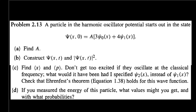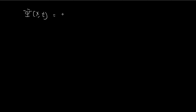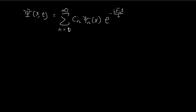Now for part B, we need to construct the wave function with the time component included. Recall the formula for the wave function — it is equal to the linear combination of all the possible stationary states: cn times the nth stationary state, which has the x-dependent term, and then the time-dependent term. In our case, we can find what these cn's are equal to by comparing the coefficients when time is equal to 0. We're given the initial wave function, and as we've just found, it's equal to 1 over 5 times 3 xi 0 plus 4 xi 1.